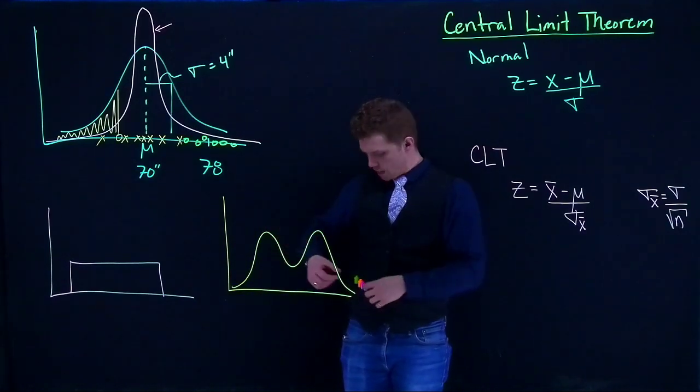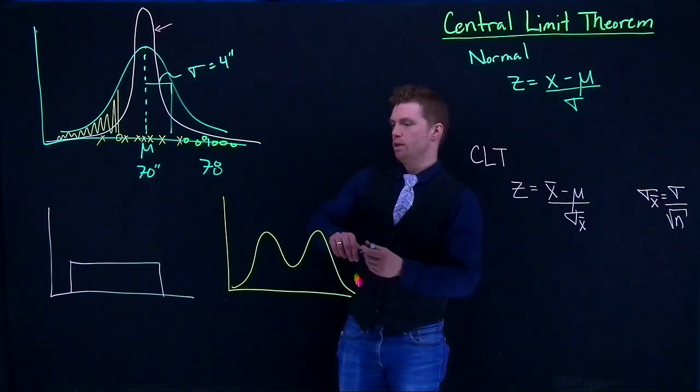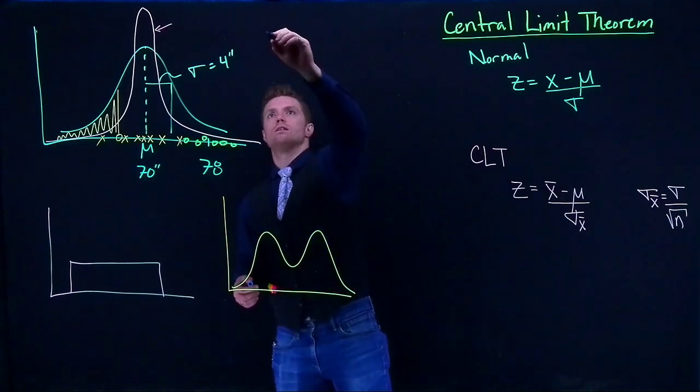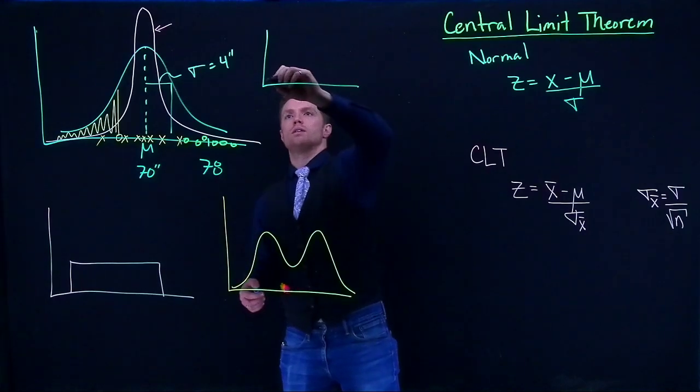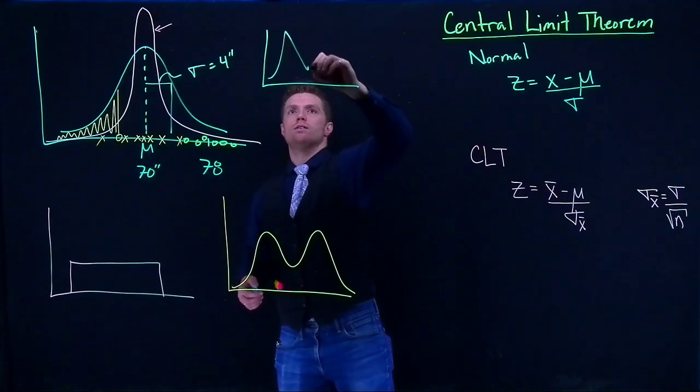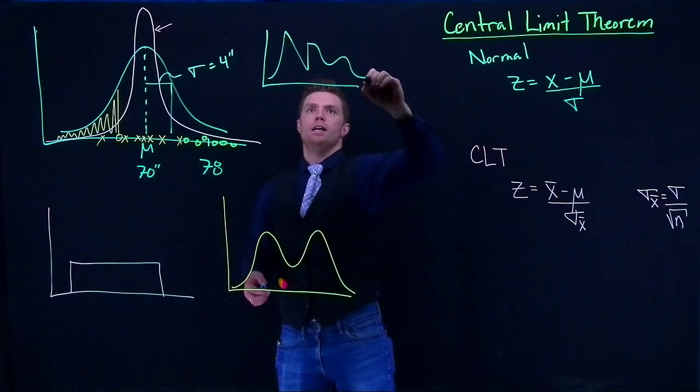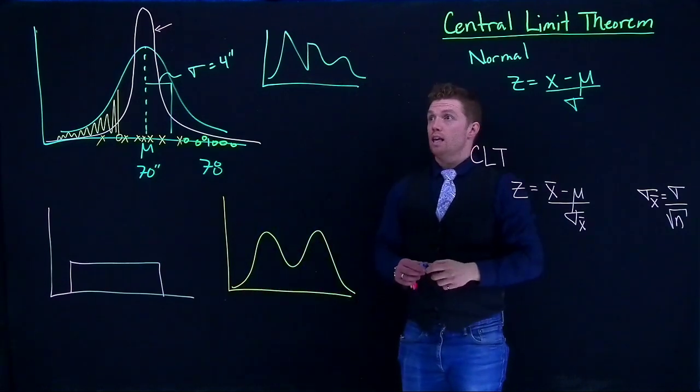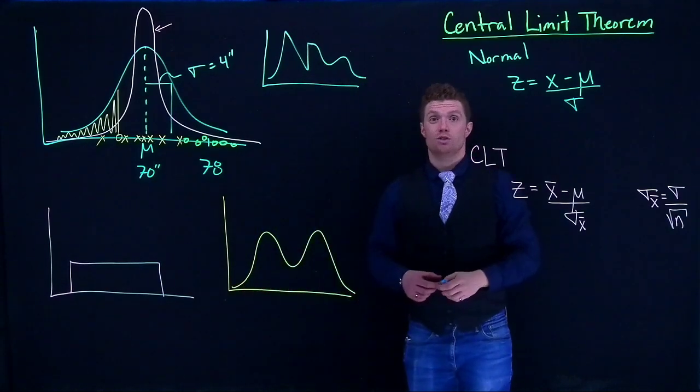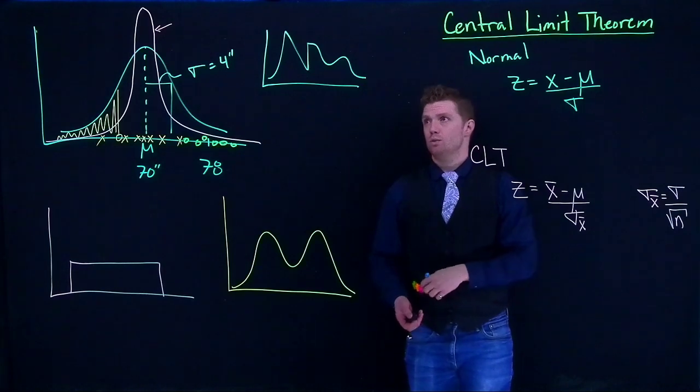We could probably find an equation for each of those, but what about if we even had an equation that looked like this, where it did that? And that's a really weird distribution.